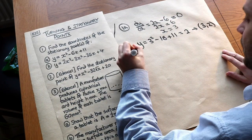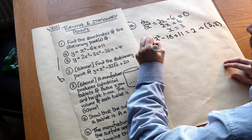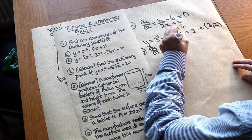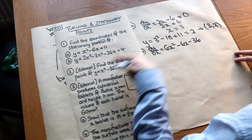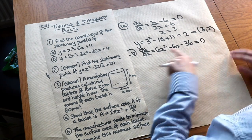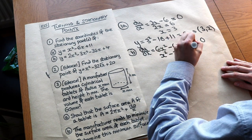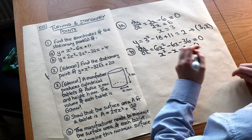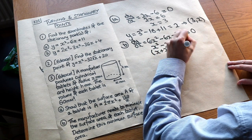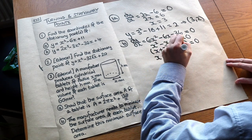For this second example, we differentiate and set it to zero because it's a stationary point. So dy/dx = 6x² − 6x − 36. Because it's a stationary point, we set it equal to zero. All terms divide by 6, so dividing both sides by 6 simplifies the equation. We can now solve this quadratic by factorising: (x + 2)(x − 3) = 0, giving x = −2 or x = 3.